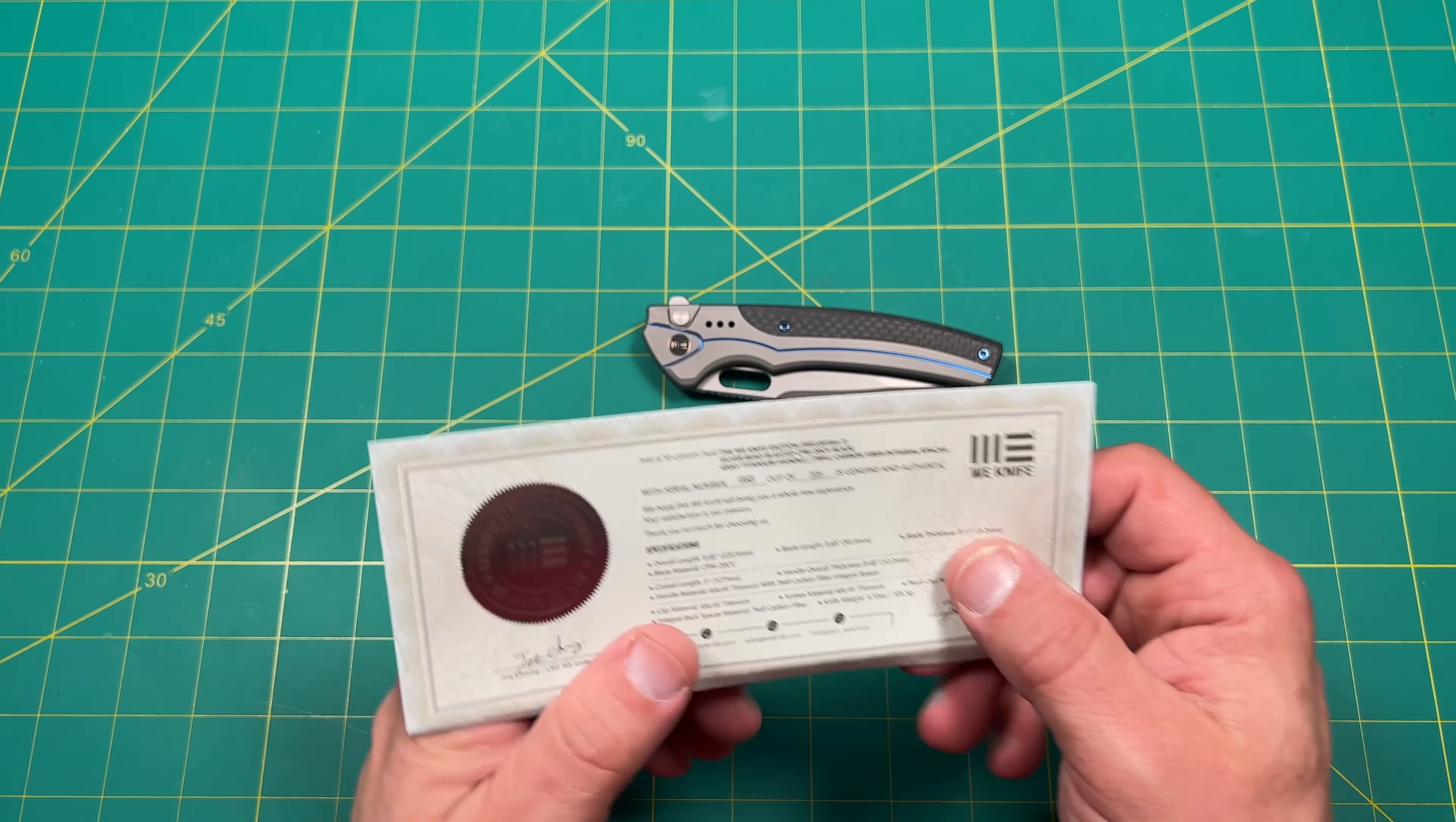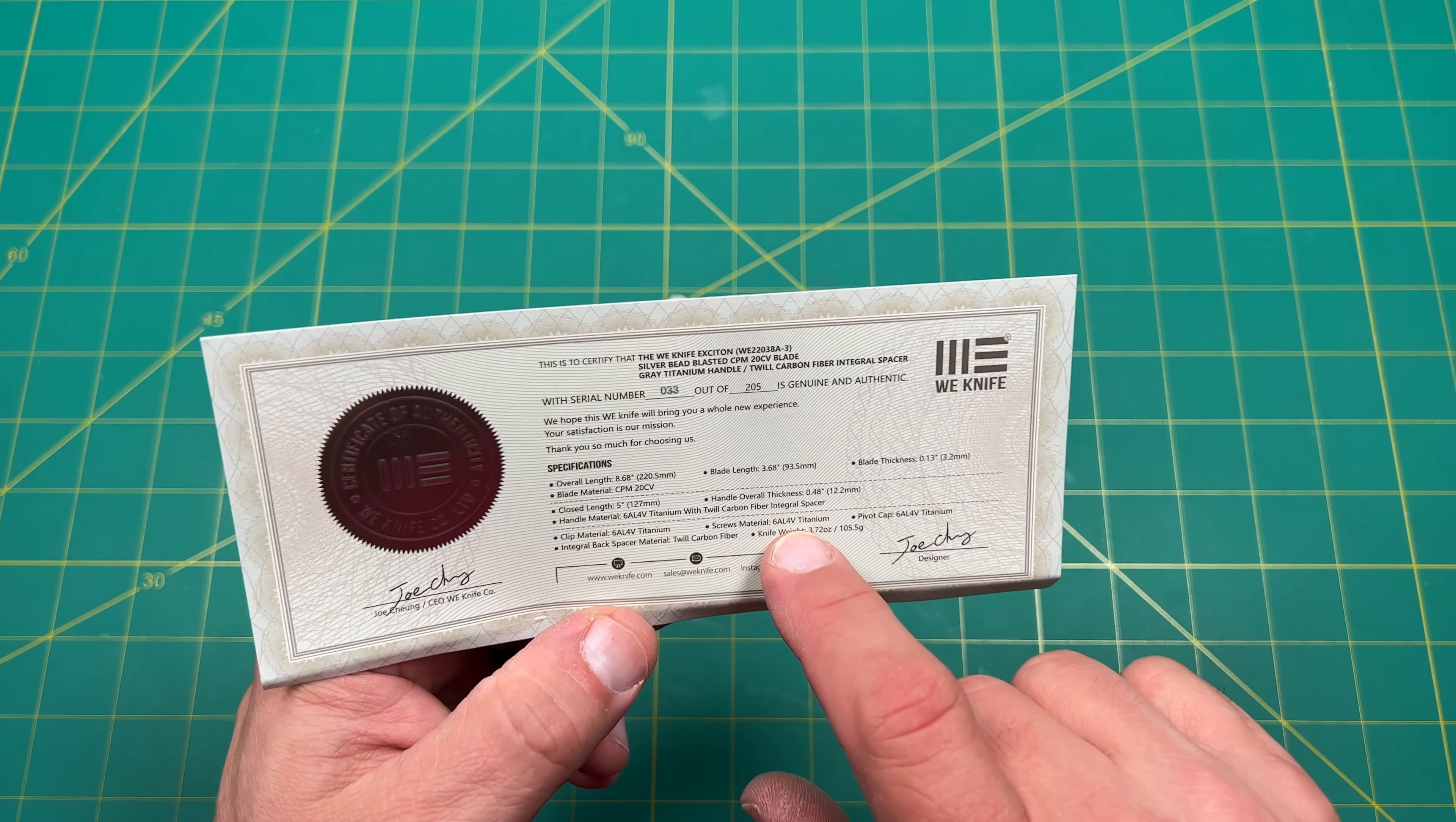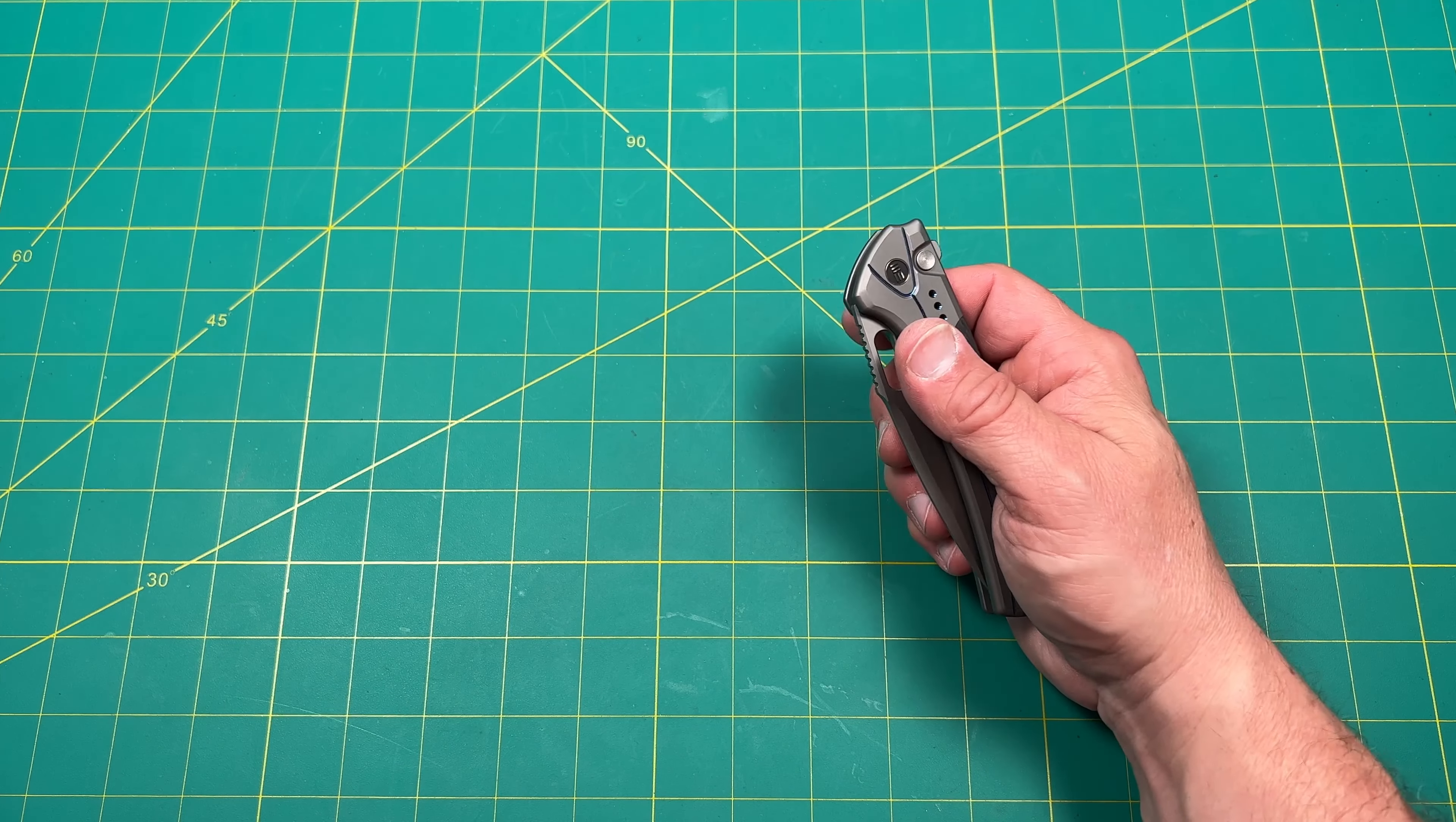I guess I'm kind of curious what the specs were on this thing here. Let's see what it says. All right. So overall length, 8.68 inches blade, 3.68, right? Blade thickness, 0.13, relatively thin for such a large knife. CPM 20CV, close length, about five inches. Handle thickness is a little less than a half an inch. Nice titanium, twill carbon fiber integral backspacer. Nice. The clip is titanium screws, titanium pivot captures, titanium integral backspacer material, twill carbon fiber. Let's see here. Does it say the finish? It doesn't really say what the finish is on this one, but that's all right. Wait, here we are. Silver bead blasted. CPM 20CV, gray titanium handled twill carbon fiber. Okay. So it is silver bead blasted.